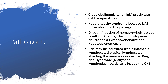Hyperviscosity syndrome can occur because IgM molecules slow the passage of blood, and then the red blood cells will form rouleaux formation. Red infiltration of hematopoietic tissues will result in anemia, and also leads to thrombocytopenia — which leads to bleeding — and neutropenia, which means infections. There is also lymphadenopathy, swelling of the lymph nodes all over, and hepatosplenomegaly. The central nervous system may be infiltrated by plasmacytoid lymphocytes, affecting the meninges as well.